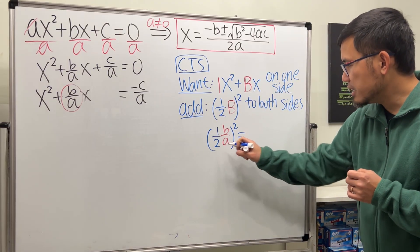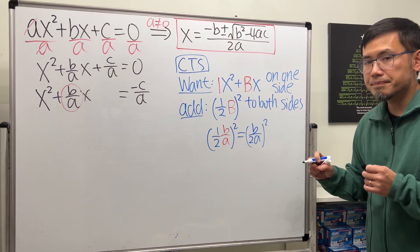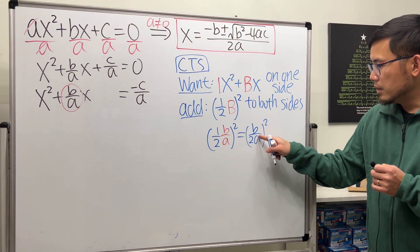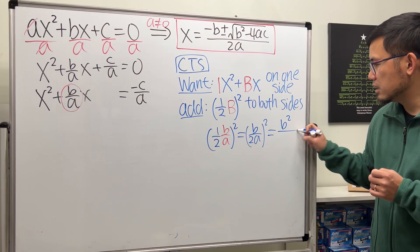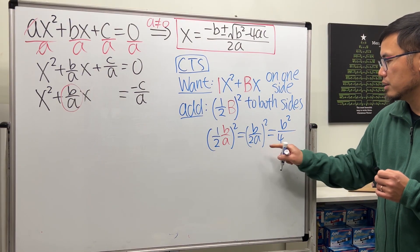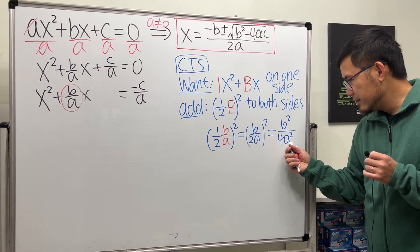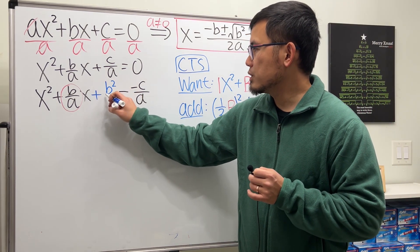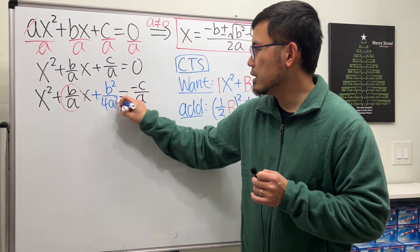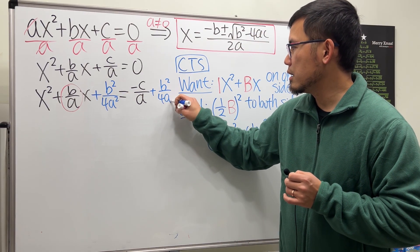So in this case, we have one half. The b is b/a, and then we have to square that. So the inside is b/2a, and then square that. And when we square this, we can just do b². 2 squared is 4, and then a². Now, we are going to add this to both sides: + b²/4a². And then do the same thing right here.